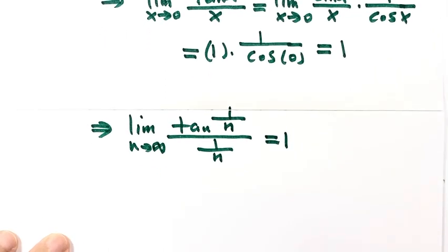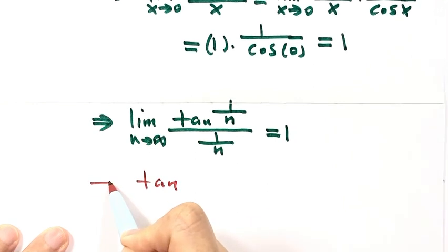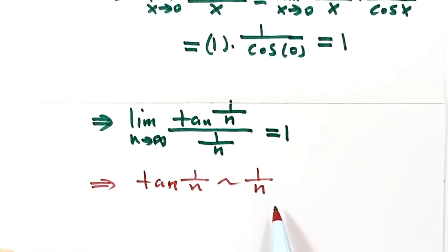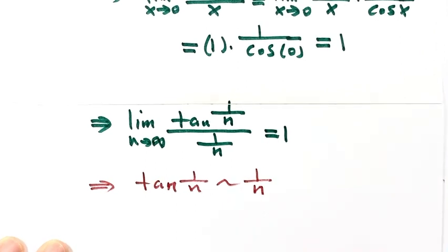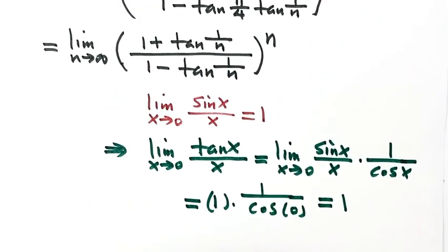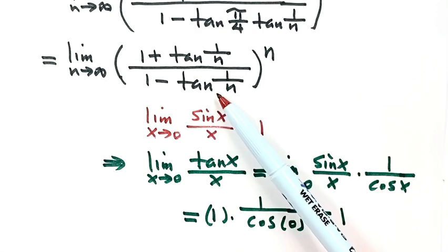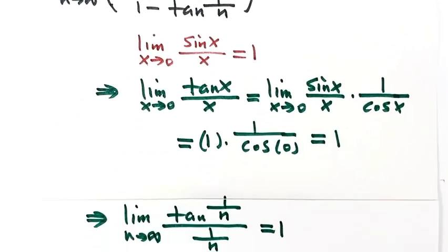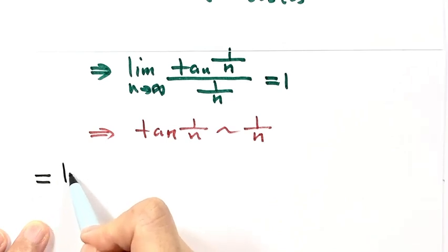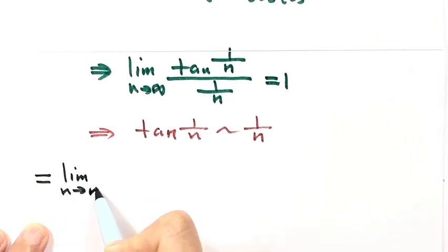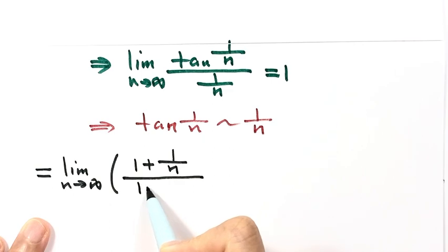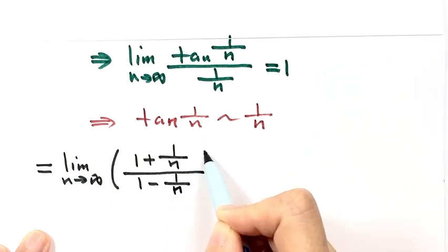From this result, 1 over n is an equivalent infinitesimal of tangent(1/n), meaning we can use 1 over n to replace tangent(1/n) in our expression. So continuing, the limit becomes (1 plus 1/n) over (1 minus 1/n), raised to the power of n.